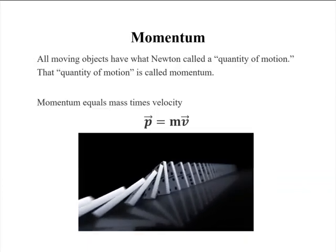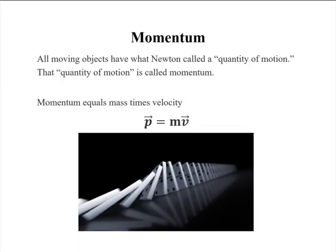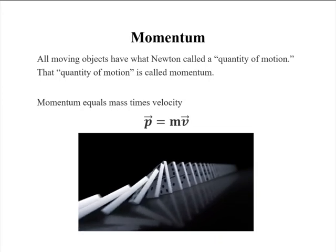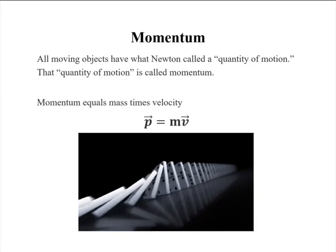All moving objects have what Newton called a quantity of motion. That quantity of motion is called momentum. Momentum equals mass times velocity. We use the letter P for momentum. And since velocity is a vector, momentum is a vector as well. It has both magnitude and direction.